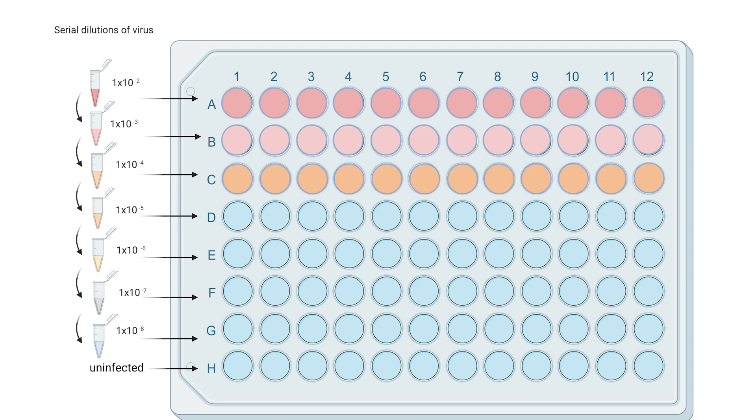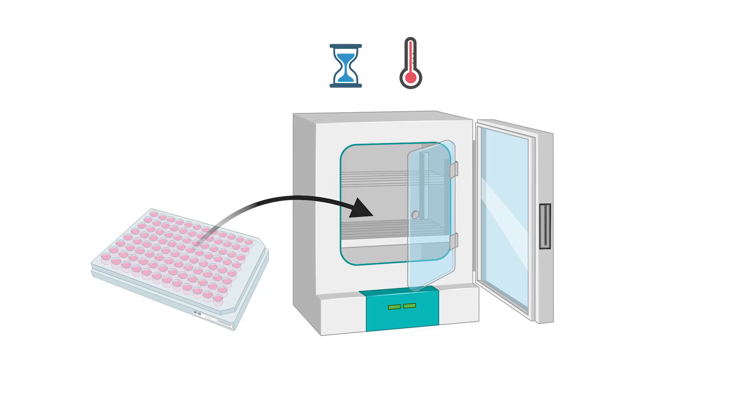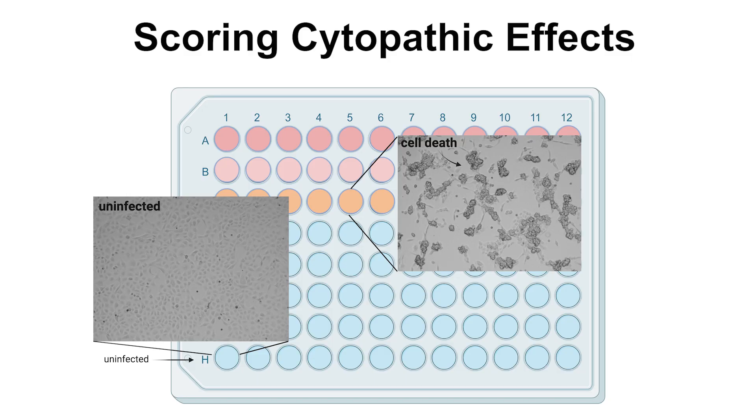After inoculating, we incubate the plate to allow sufficient time for the virus to infect the cells. We then observe each well for signs of infection.